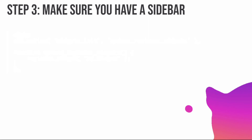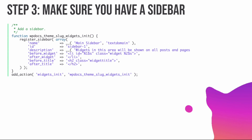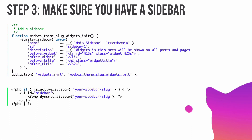We discussed sidebar registration in the previous video — you register a sidebar using register_sidebar(), passing parameters like name, ID, and description, then hook it to widgets_init. To display it, you either create a sidebar.php file, call dynamic_sidebar() inside it, and include it using get_sidebar(), or you can directly check if a sidebar is active using is_active_sidebar() and then call dynamic_sidebar() to display it.